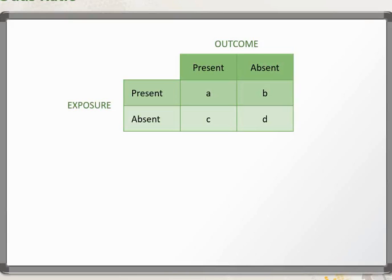Today I'm going to take you through the interpretation of an odds ratio, and we'll look at the actual interpretation in an actual study looking at chocolate consumption and cardiovascular disease. So first, let's look at what an odds ratio is. An odds ratio is nothing but the ratio of the event or the outcome occurring in the exposed group divided by the event occurring in the non-exposed group.